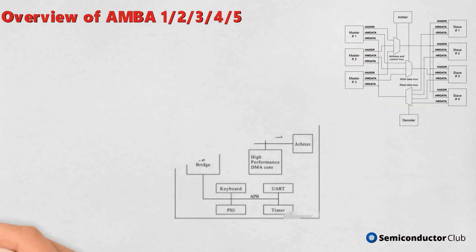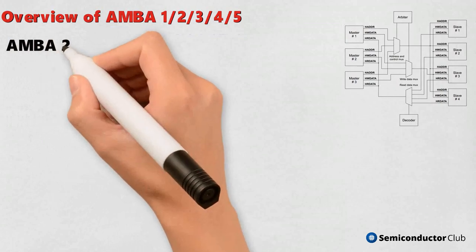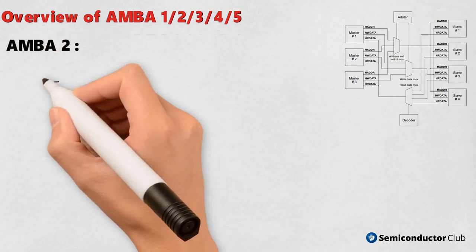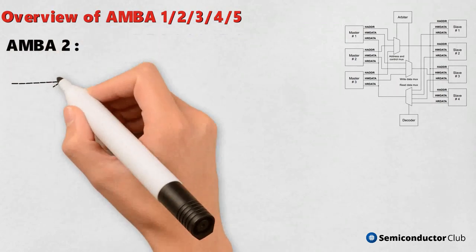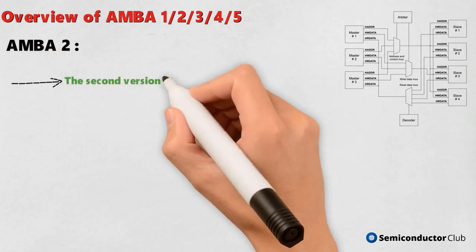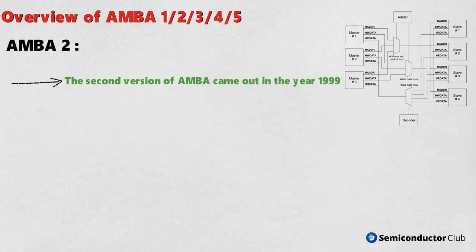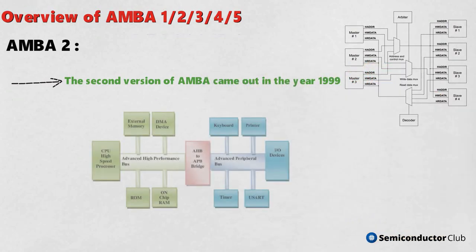AMBA 2: the second version of AMBA came out in the year 1999 with a new bus named Advanced High Performance Bus (AHB), along with ASB and APB.